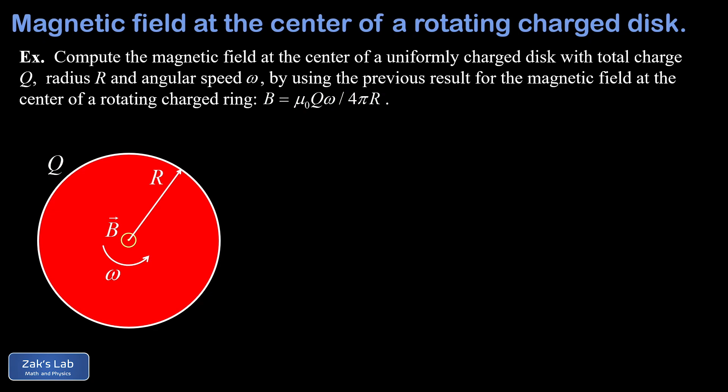So the strategy here is that we're going to break this disk into concentric rings, find the magnetic field contribution due to each ring, and then we add up all the contributions by using an integral.